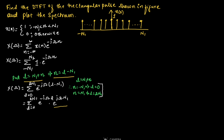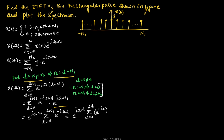So we can write the above expression as e^(jωn1) times summation from l=0 to 2n1 of e^(−jω) to the power of l. Now we can use the formula: summation from n1 to n2 of a^n equals a^n1 minus a^(n2+1) divided by 1 minus a.